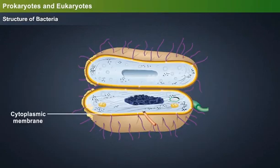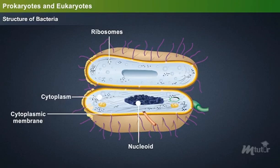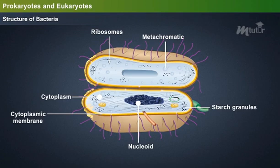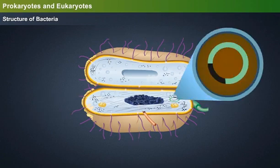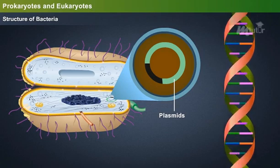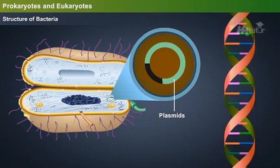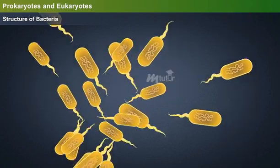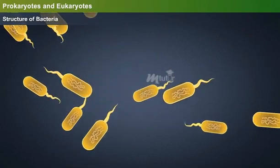The cytoplasmic membrane encloses the cytoplasm. The cytoplasm consists of nucleoid, ribosomes, and several inclusions such as metachromatic and starch granules. Each nucleoid contains a single double-stranded circular chromosome. Plasmids are double-stranded extra-chromosomal DNA found in the cytoplasm and are capable of replicating independently.